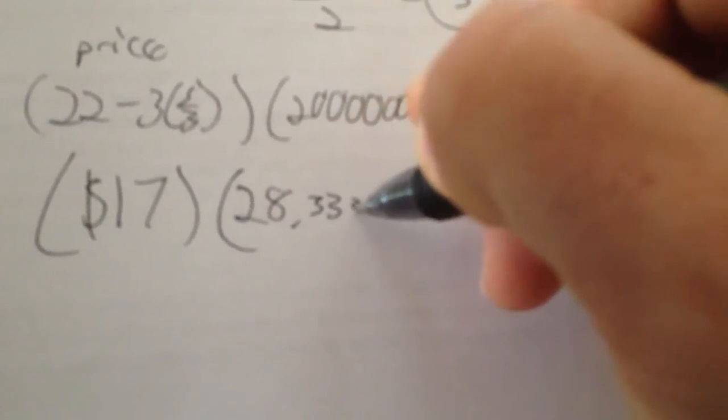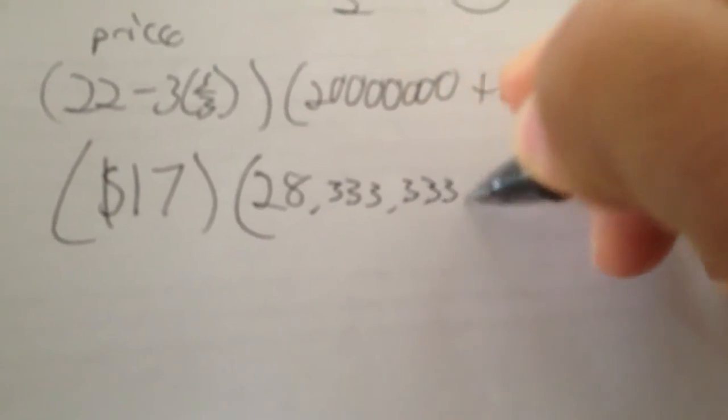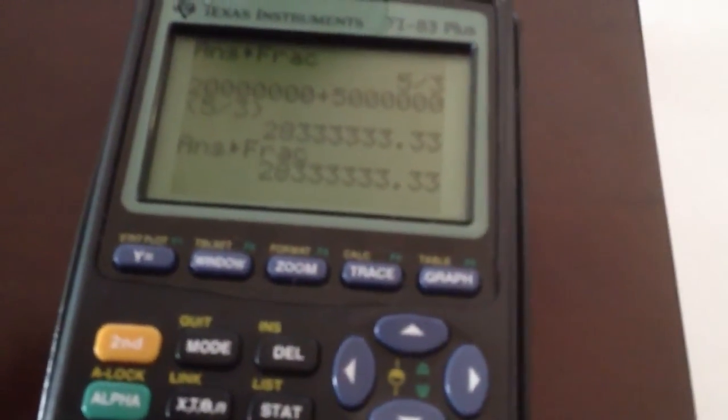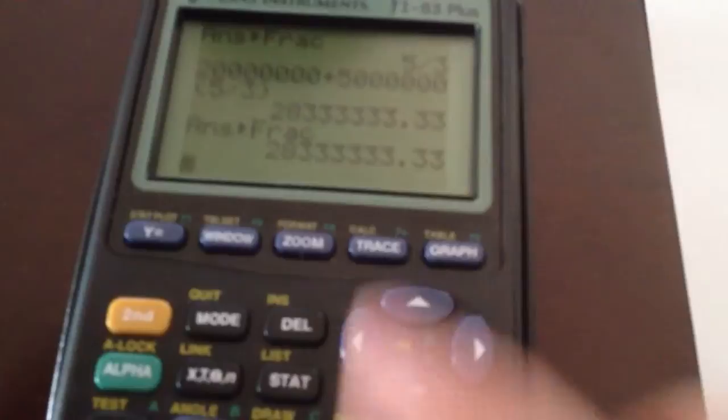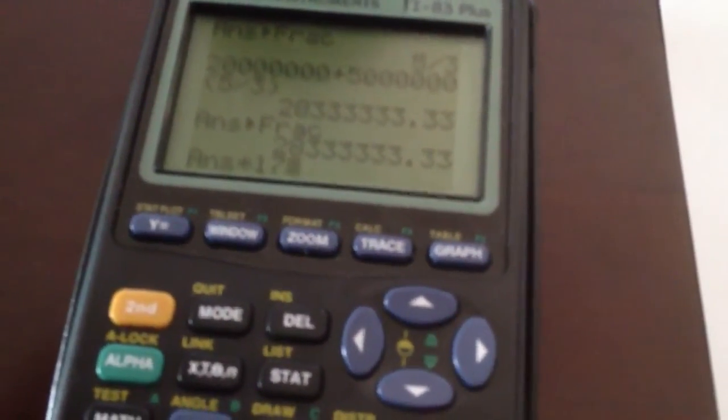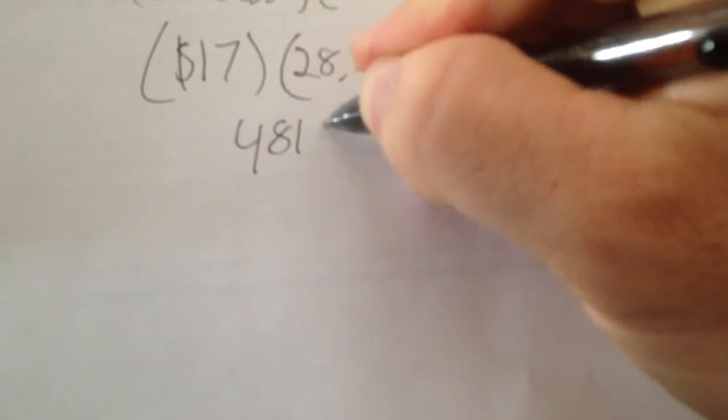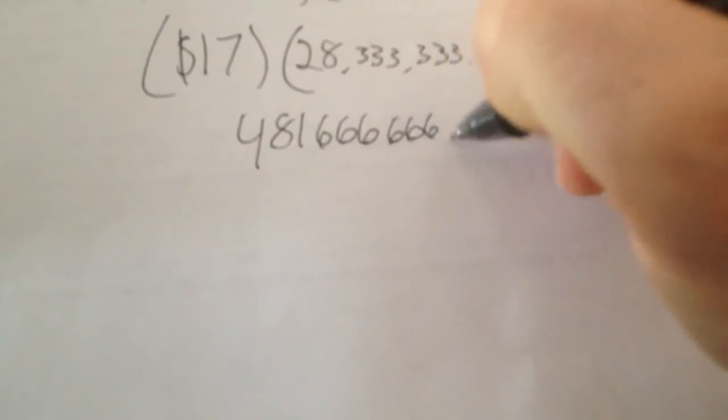And I'm going to put the decimal here, even though I'm going to use the calculator to help me do this. So I can be as precise as possible and hit math, enter, enter. And the calculator's not going to like that one for us. That's what you get for making up a problem on the fly, Mr. Harrison. But anyways, we take that, 28.3 million basically, and we multiply that by $17 in my price. And so I'm going to make $481,666,666.7.